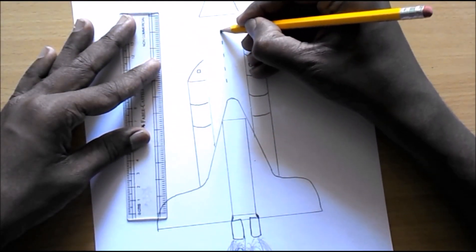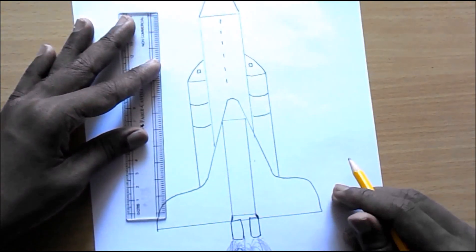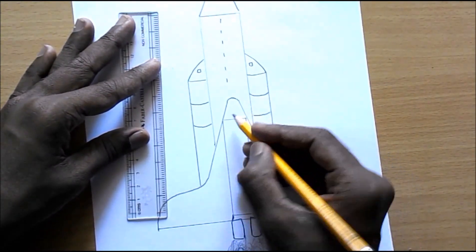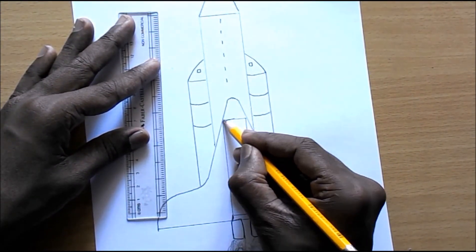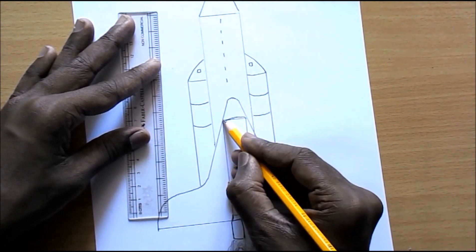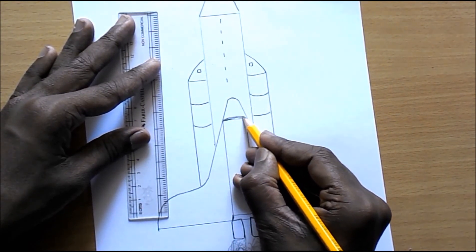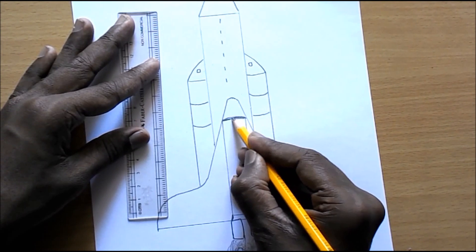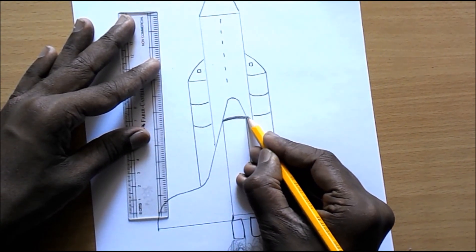And after that, at the center, draw dashes and finally darken some of the positions on your rocket so that it looks nice.